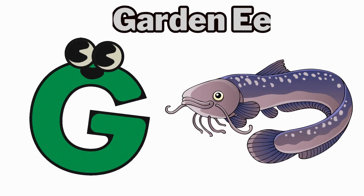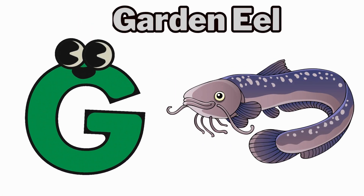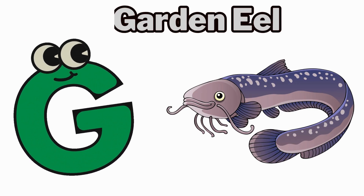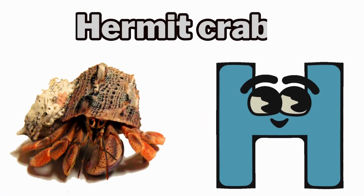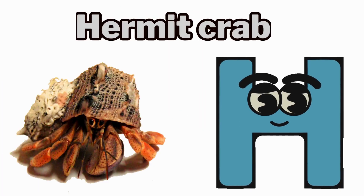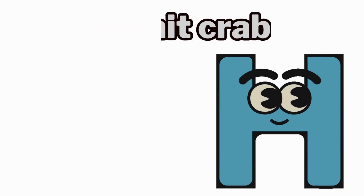G is for garden eel. Guh, garden eel. H is for hermit crab. Ha, hermit crab.